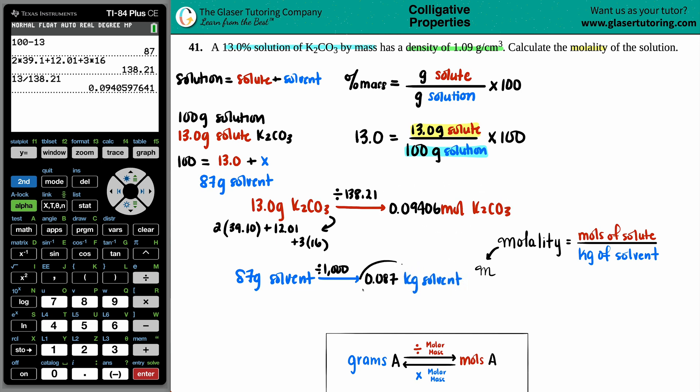I got the moles of the solute. I got the kilograms of the solvent. Let's find out that molality. Molality equals the moles of the solute, 0.09406 divided by the 0.087. So we'll use this number divided by the 0.087. That looks good to me. Press enter. Looks like we need three sig figs. So say 1.08 units. You could just put the nice little squiggly molality, lowercase m. And that's it.